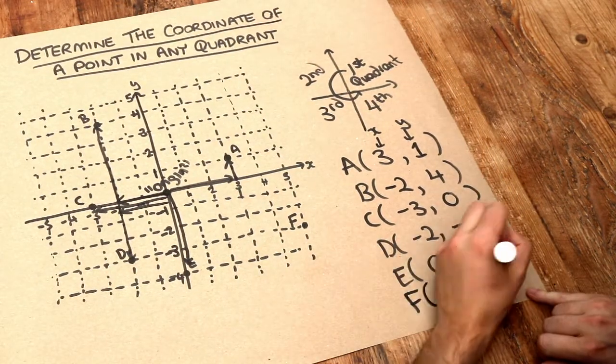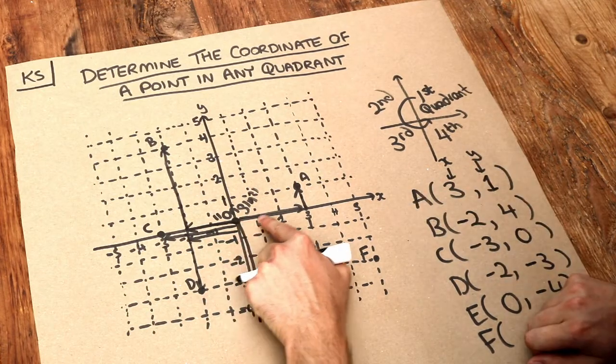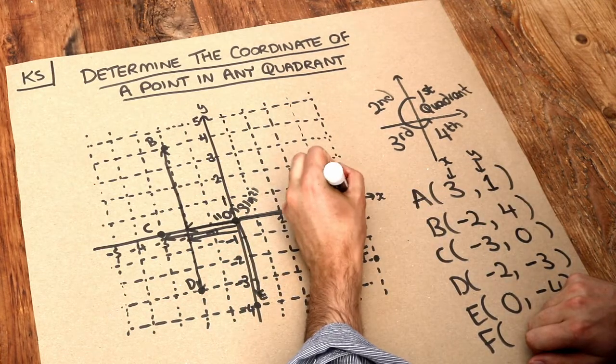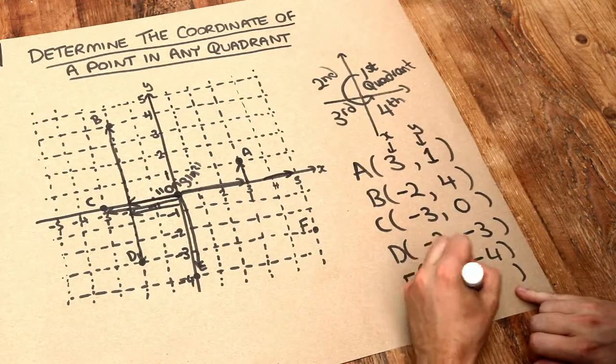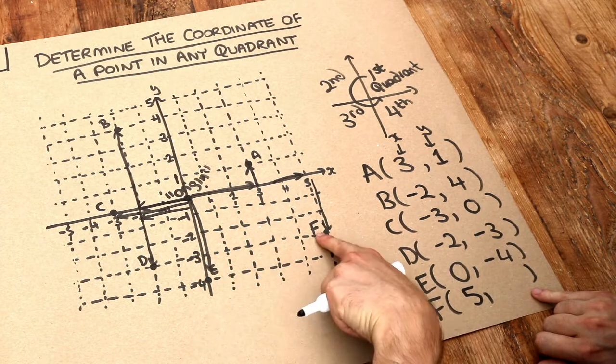And then finally F, can you see in the x-direction, we have to go along to five, so the x-value is five, and then we have to go down three to a y-value of minus three.